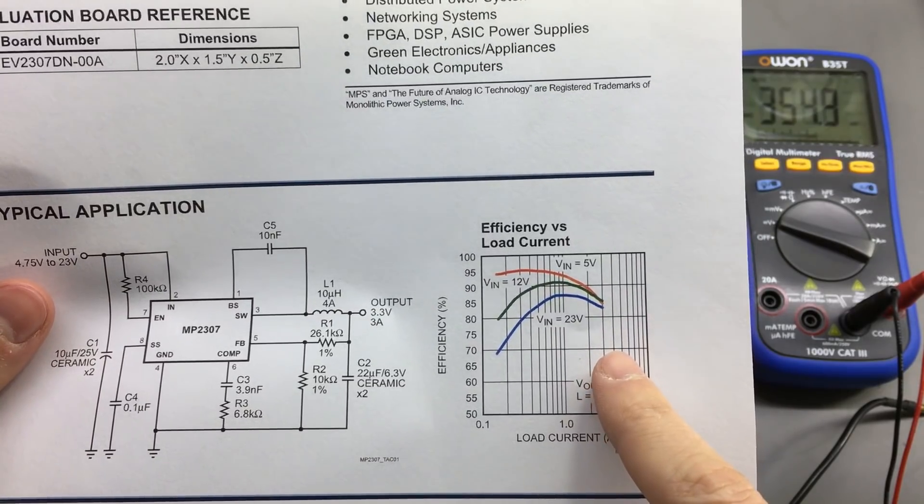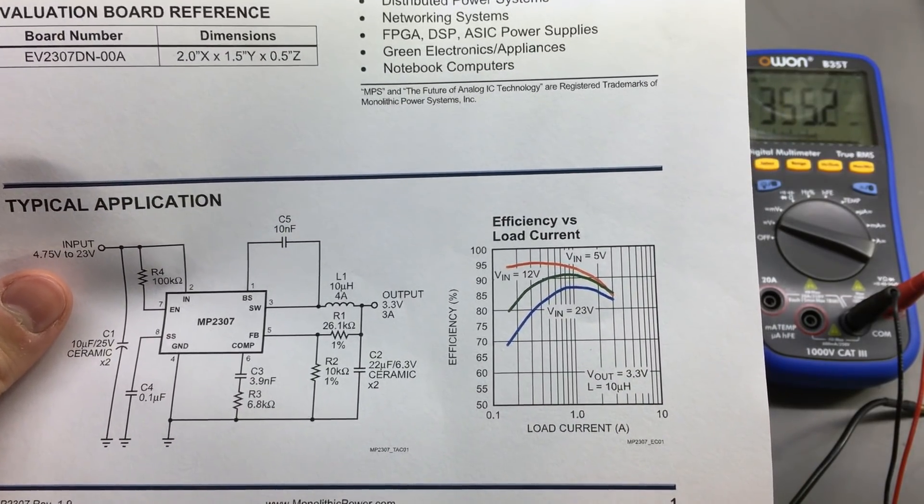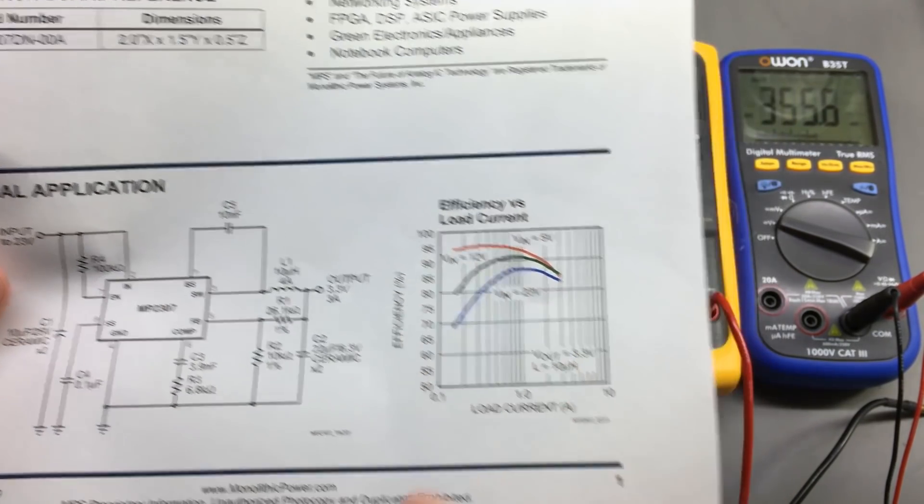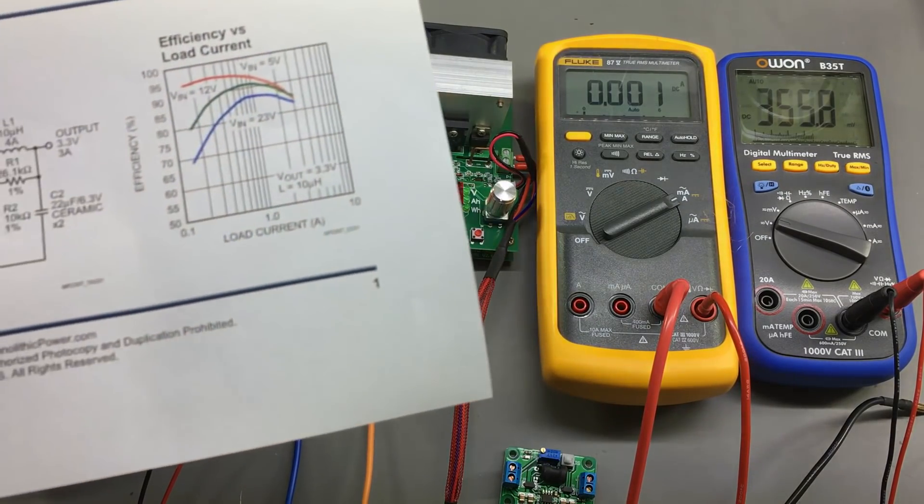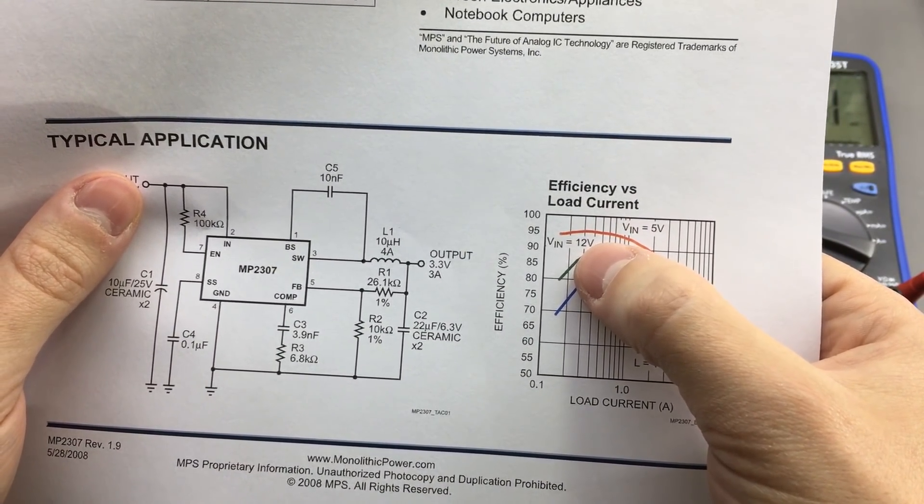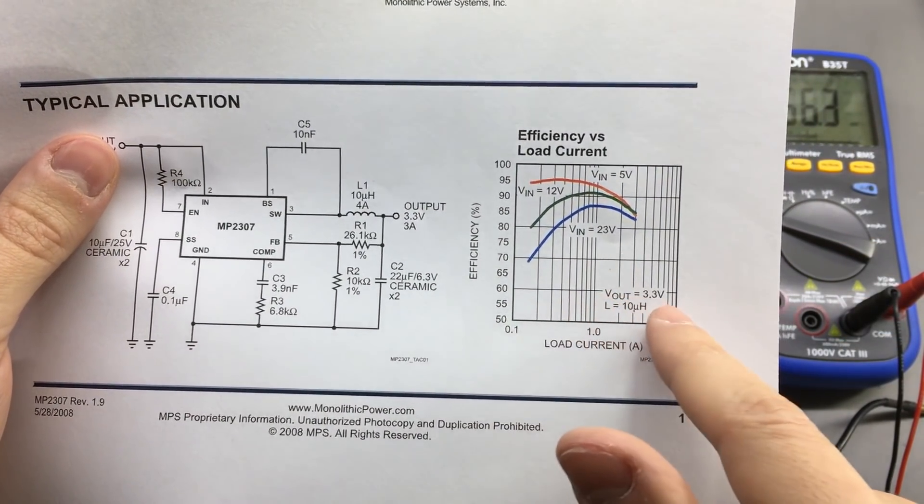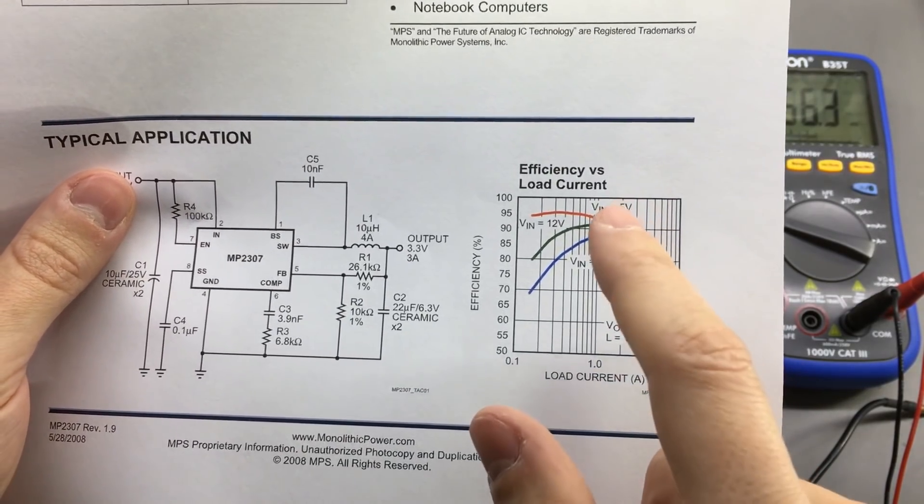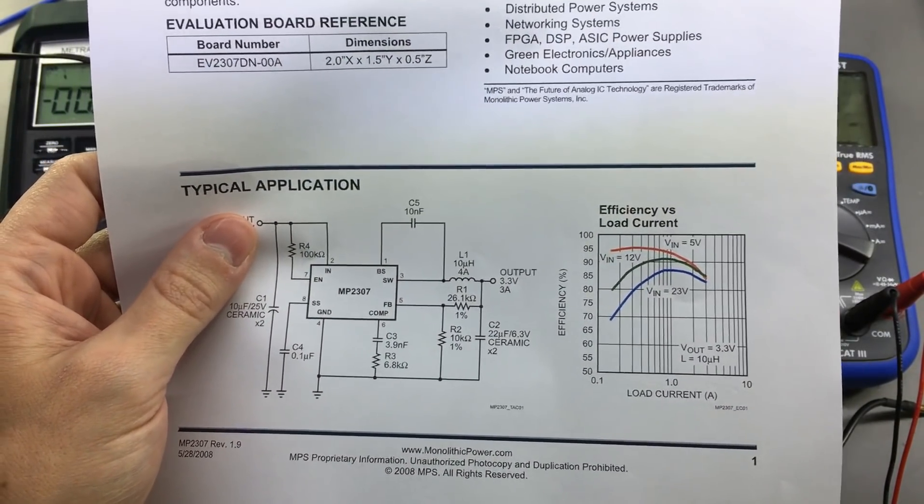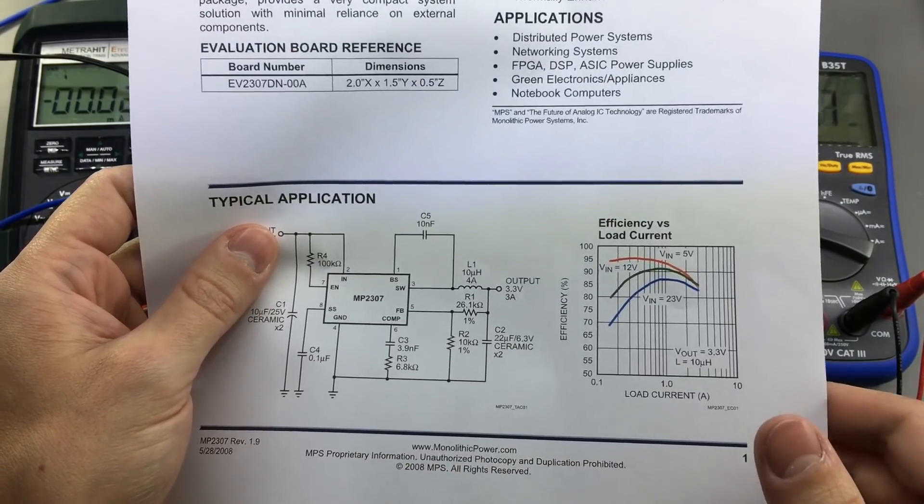This graph right here shows the efficiency of the chip at different conditions. At around 0.4 or 0.5 amps with a V input of 5 volts and a V output of 3.3 volts, you get 95% efficiency. It's that red curve. And this is something to keep in mind. Any converter will have a sweet spot where the designers have tuned the efficiency to be the maximum possible.